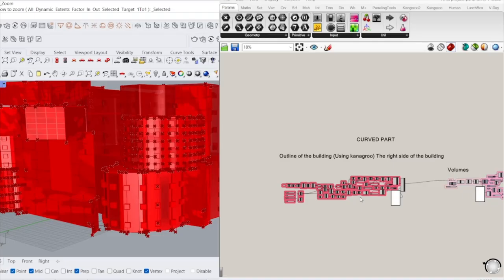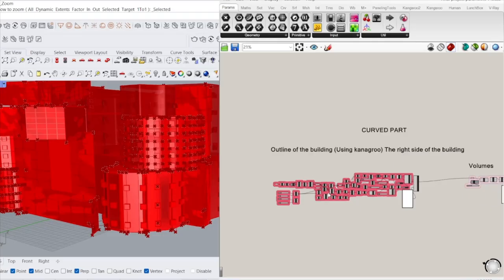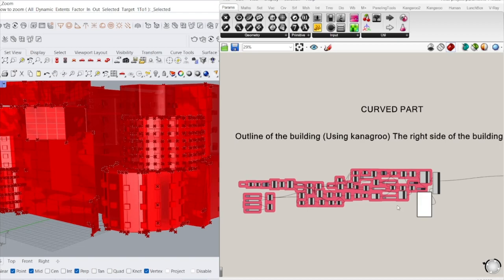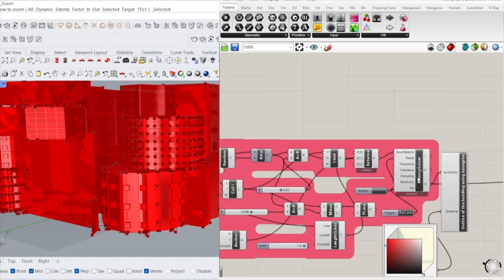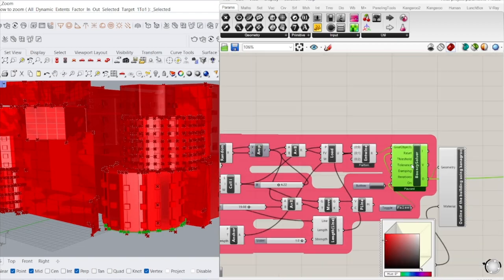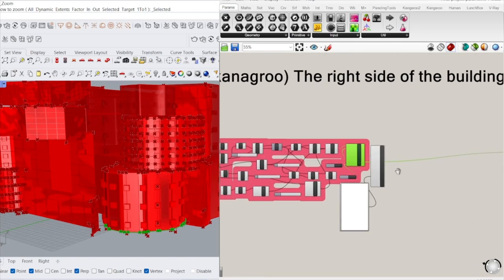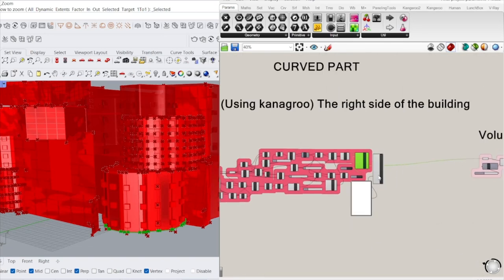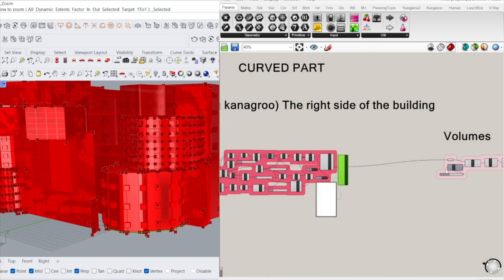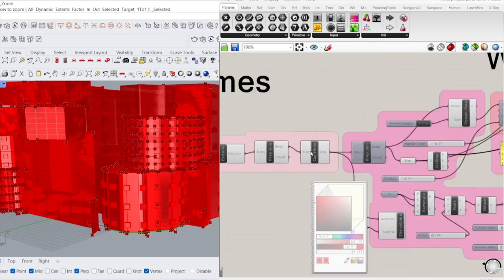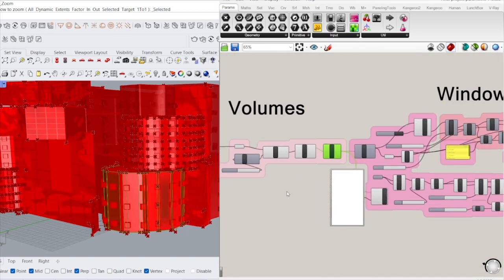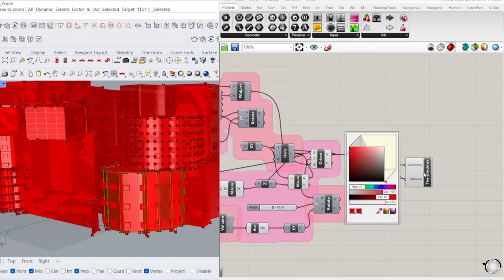So this is the final result of Rhino and Grasshopper. First of all, I wanted to show you the outline of the building by using kangaroo physics. And when I generated the outline, from the outline itself, I extracted the volume of the building itself. And then using this volume, I created these windows.